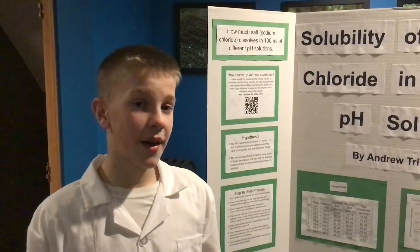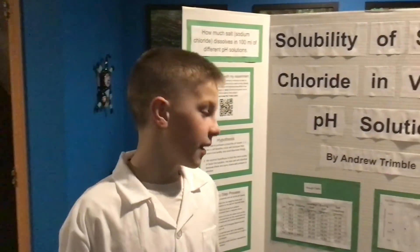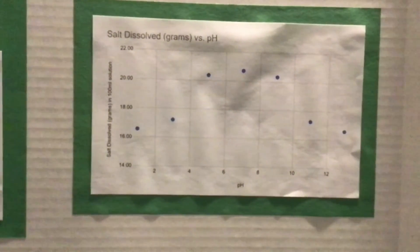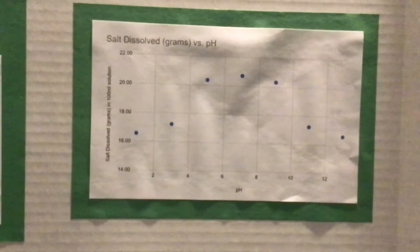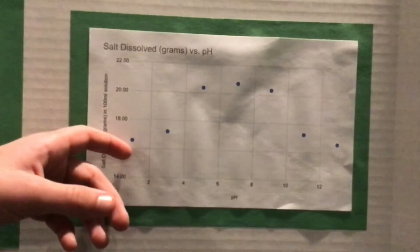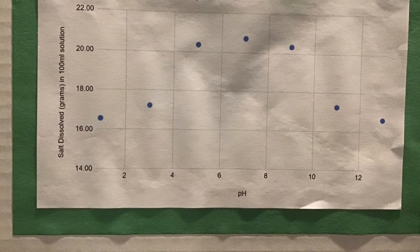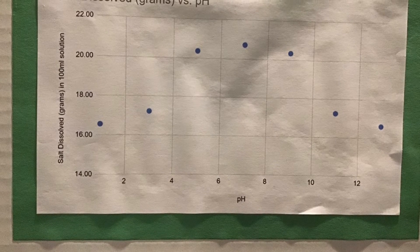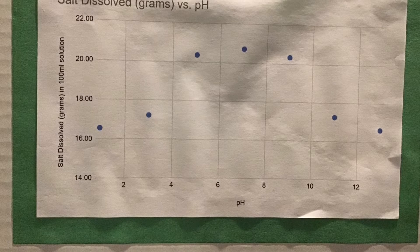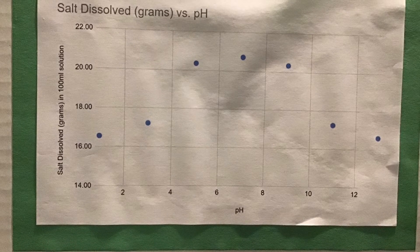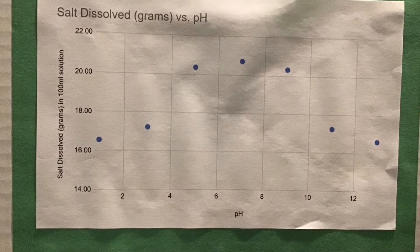And now I will show you a graph of my data. Here on the y-axis, there is the total salt dissolved in grams in each 100 milliliter solution. And on the x-axis is the pH levels. As you can see, there is a nice symmetrical curve to the graph. The low and high pH levels dissolve the least amount of salt, and the middle ones, closest to pure water, dissolve the most amount of salt.